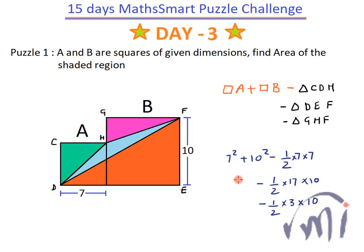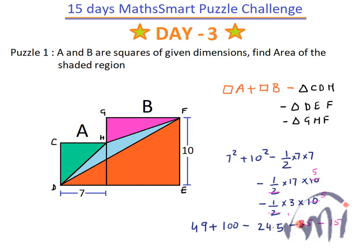So this will be equal to 7 squared is 49, 10 multiplied by 10 is 100, minus 49 divided by 2 which is 24.5, and minus — this is 1/2 times 17 times 10 which is 85, and minus 1/2 times 3 times 10 which is 15. So 85 and 15 are 100, so minus 100 plus 100 — they will cancel each other.